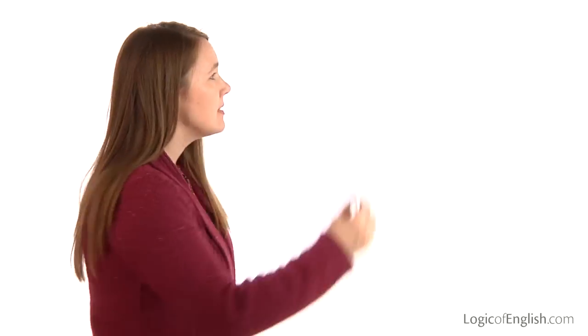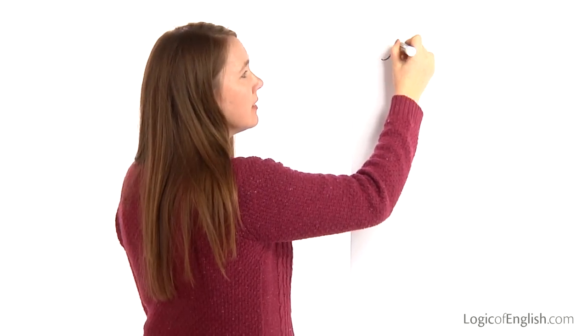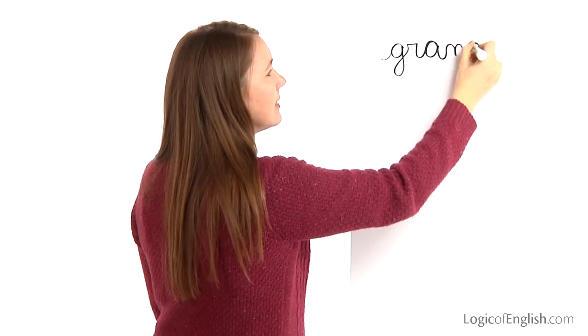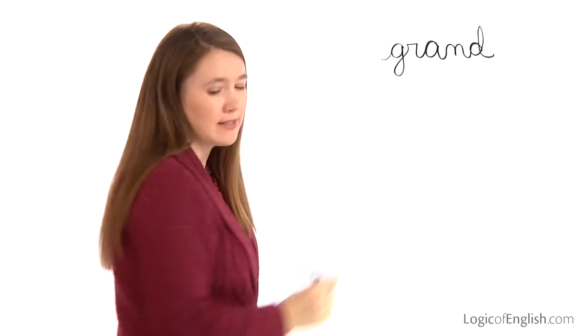The next word is grand. We have a grand piano. Grand. One syllable. Let's sound it out together: G, r, a, n, d. Grand. Go ahead and write it. G, r, a, n, d. Grand.